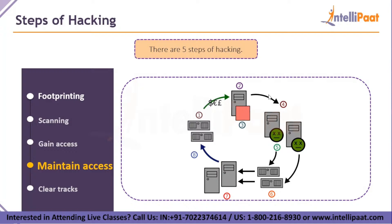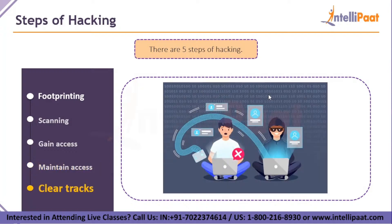Finally, when they maintain access, they have to clear their tracks. Prior to the attack, the attacker would change their MAC address and run the attacking machine through at least one VPN to help cover their identity. They will avoid delivering a direct attack or any scanning technique that would be deemed noisy. Once access is gained and privileges are escalated, the hacker seeks to cover their tracks — this includes clearing out sent emails, clearing server logs, temporary files, etc. The hacker will also look for indications of the email provider alerting the user to possible unauthorized logins. These are the basic five steps of hacking that every ethical hacker, cybersecurity professional, or black-hat hacker uses.